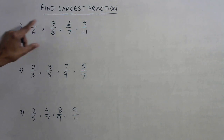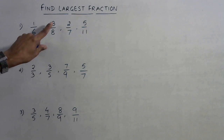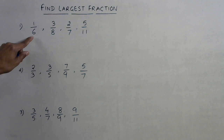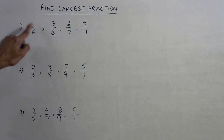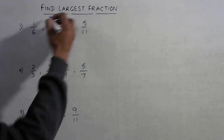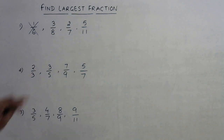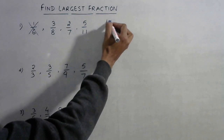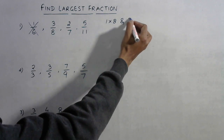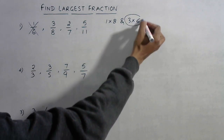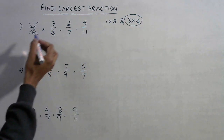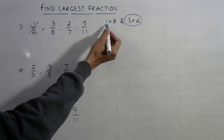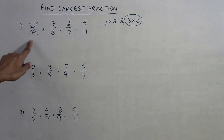So out of 3/8 and 1/6, I can say that 3/8 is larger because 3 gives a larger product on cross multiplication: 3 into 6 is 18, and 1 into 8 is 8. So the fraction with numerator 1 is discarded because it gives the smaller product.